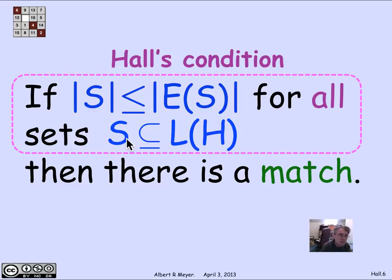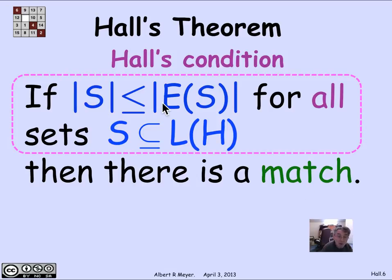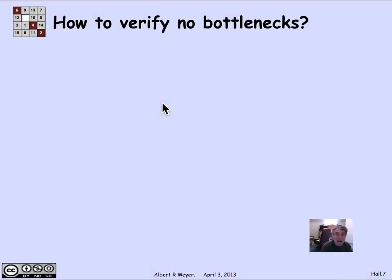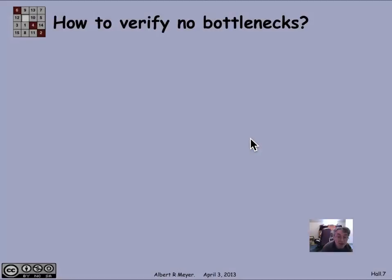We'll be comfortable going back to the boy-girl language, because it's more memorable and easier to talk about. But just for the record, we have now formally defined bipartite graphs, matches in bipartite graphs, and Hall's theorem — that there is a match when Hall's condition is satisfied. The puzzle is: how do you verify that there are no bottlenecks? The bottleneck condition involves checking that every subset S of L of H satisfies this cardinality condition, and there are exponentially many subsets of L of H relative to the size of the graph.